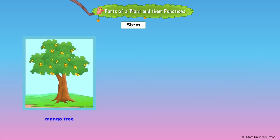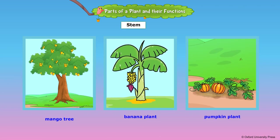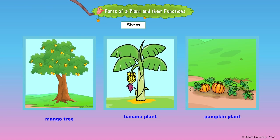The stem is the main part of the shoot system. It holds the plant upright. It supports the branches, leaves, buds, flowers and fruits.